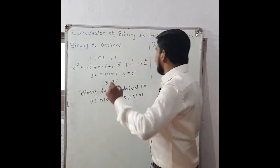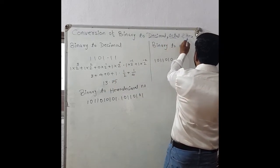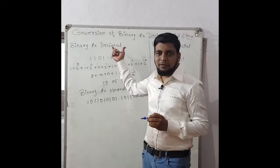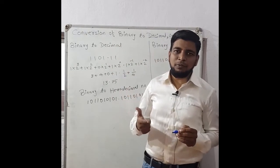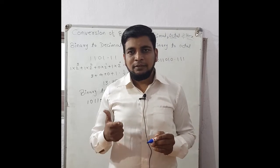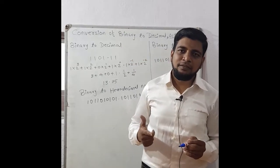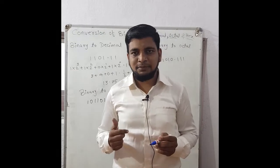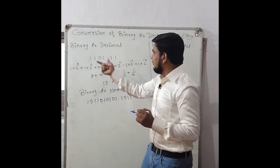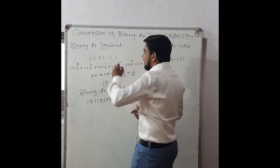If a binary number is given, we know that a binary number is in the form of zeros and ones. If we need to convert this binary sequence into its decimal equivalent, octal equivalent, and hexadecimal equivalent, then how do we convert it? First we will see binary to decimal — how to convert a binary number into its decimal equivalent.